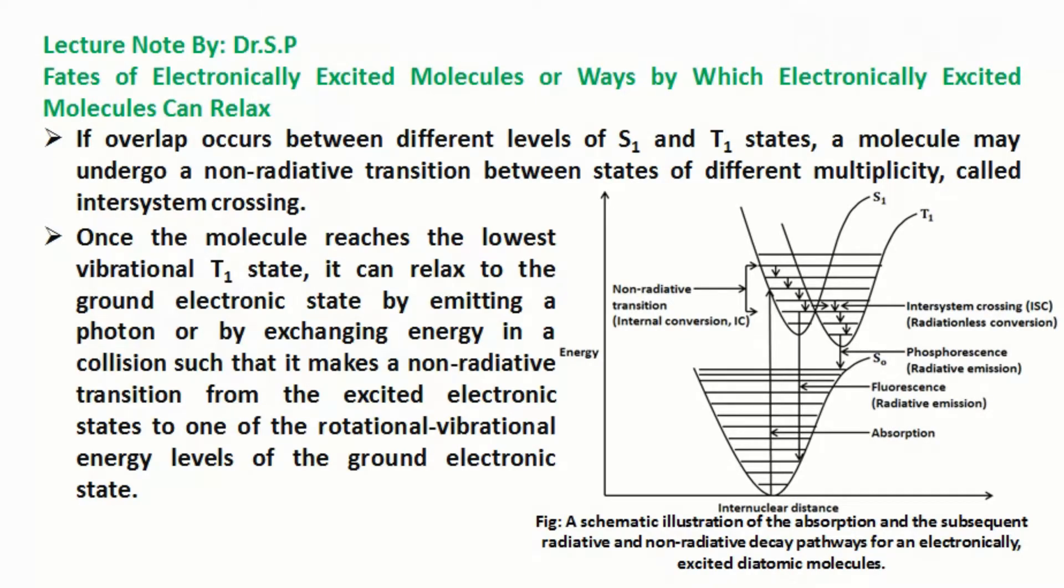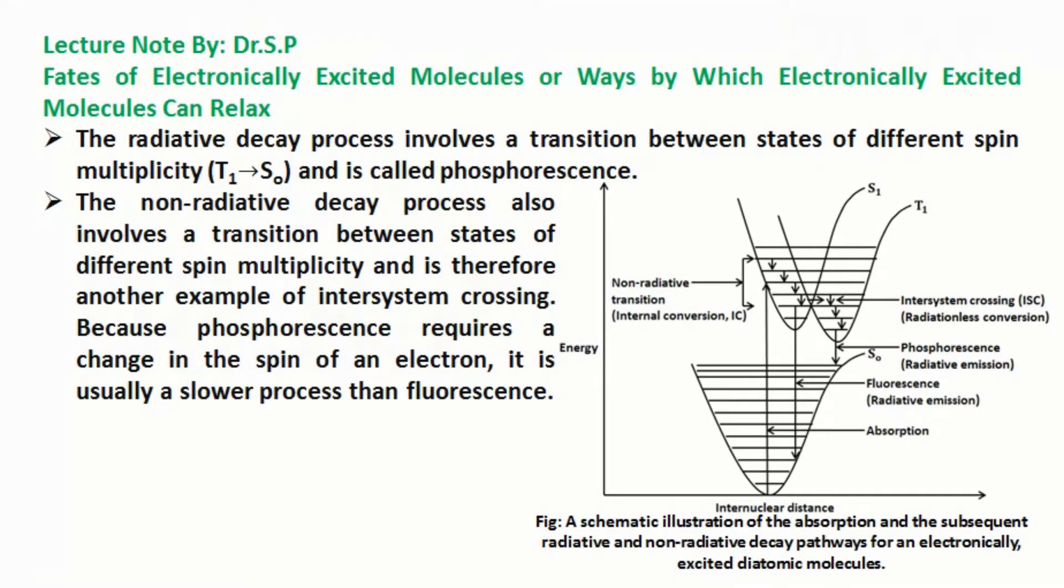The radiative decay process involves a transition between states of different spin multiplicity, for example T1 to S0, that means transition from excited triplet to the ground state and is called phosphorescence. The non-radiative decay process also involves a transition between states of different spin multiplicity and is therefore another example of inter-system crossing.